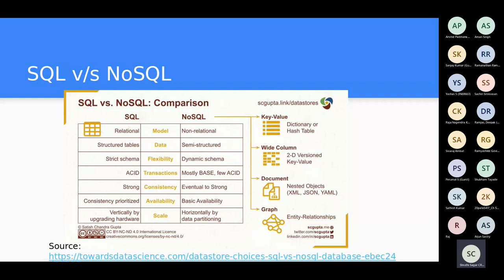Graph databases are suited for things like LinkedIn connections where you see if someone is your second or third connection, or for representing organizational hierarchies — showing who is the manager of a particular person. Neo4j is an example of a graph database used for such purposes.